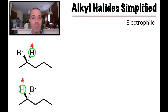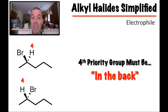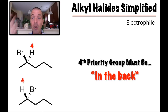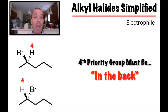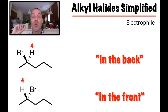In the first example, the fourth priority group was back with a dash — dash means away from us. In this new example, the fourth priority group is a wedge, meaning it's coming out at us. For this R and S method to work — when we do our connect-the-dots one, two, three — the fourth priority group has to be in the back. That's how the people who designed this system set it up. In the first example it was already in the back, so we were fine. In this new example, it's in the front, so we have to do something about it.